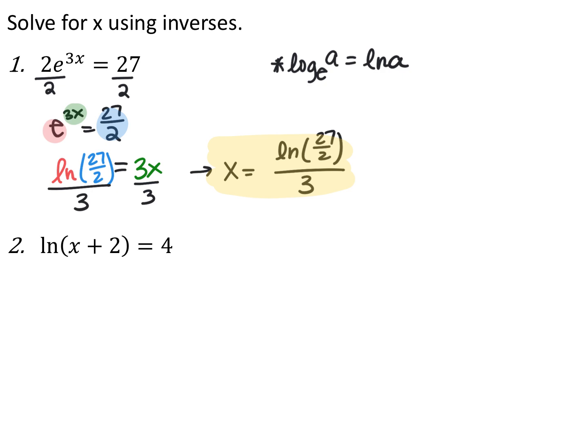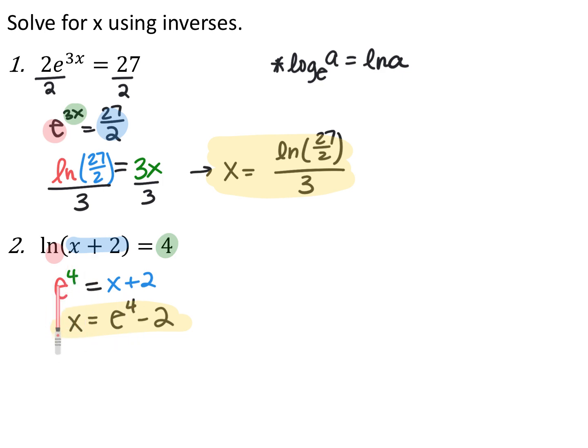I can use a similar method to solve logarithmic equations. Here I have the natural log of x plus 2 is equal to 4, so I need to get x out of my logarithm. I'll use the inverse form of exponentials to do that. There's nothing attached to the outside of the logarithm, otherwise I would isolate that first. So I switch into exponential form: this is a natural log, which means it's log base e, so e to the 4th is equal to x plus 2. Then I subtract 2 from both sides, and x equals e to the 4th minus 2.